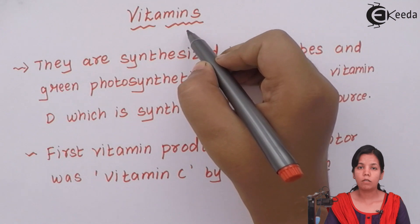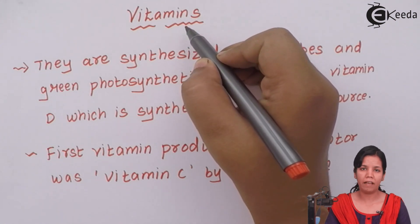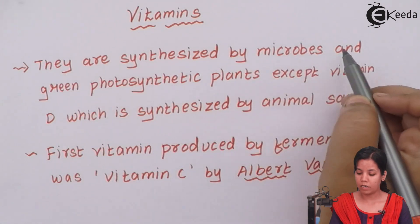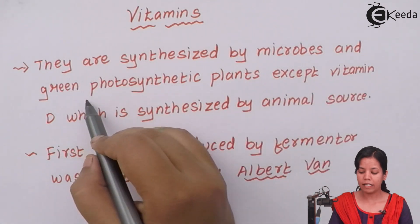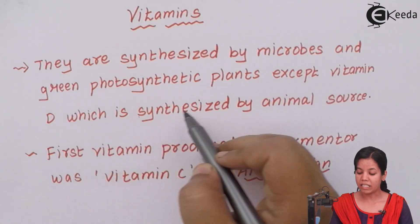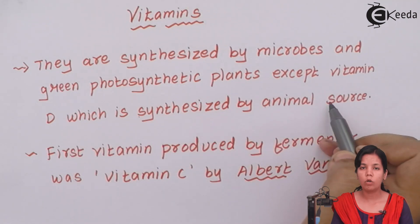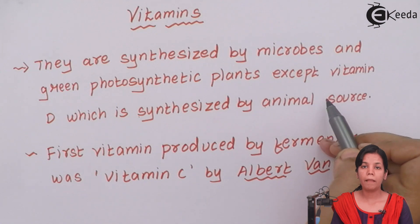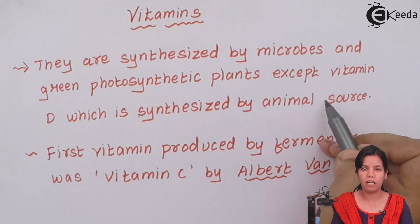Vitamins — the medicines or tablets which we have all eaten — are synthesized by microbes and green photosynthetic plants, except vitamin D which is synthesized by an animal source. So all vitamins, whether vitamin A, B, E, or K, are synthesized by microbes or plant sources, but vitamin D is synthesized with the help of an animal source.